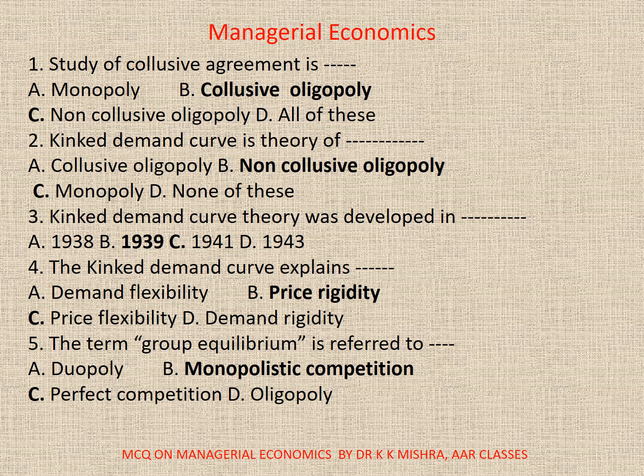4. The Kinked Demand Curve explains: A. Demand Flexibility, B. Price Rigidity, C. Price Flexibility, D. Demand Rigidity. Correct option is B. Price Rigidity.